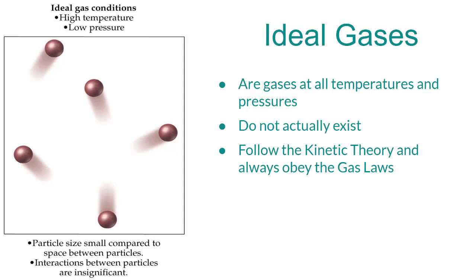Ideal gases exist as gases at all temperatures and pressures. By definition, they don't really exist. It's sort of like the perfect case, because at a low enough temperature or a high enough pressure, the particles will no longer be in the gas state — they'll either be liquids or solids. So for ideal gases, we're not even taking that into account. Ideal gases are always gases; they always follow the kinetic theory and they always obey the gas laws.